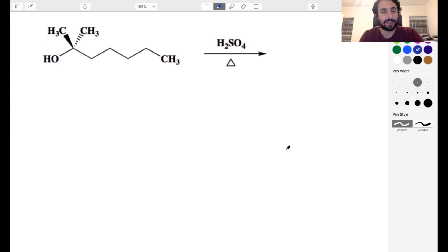Okay, let's try another practice exam. What do we have here? We've got a tertiary alcohol and we've got some sulfuric acid and it's hot. Remember this little triangle means that it is hot where we've got heat.